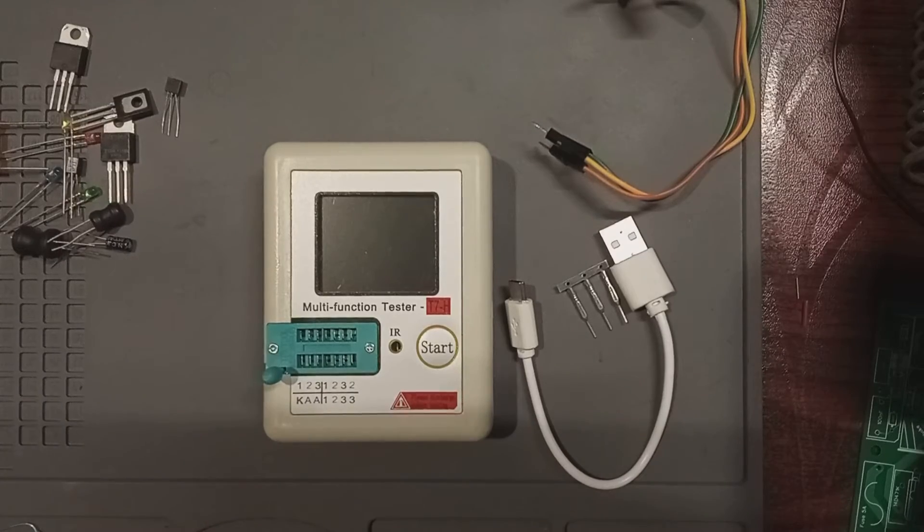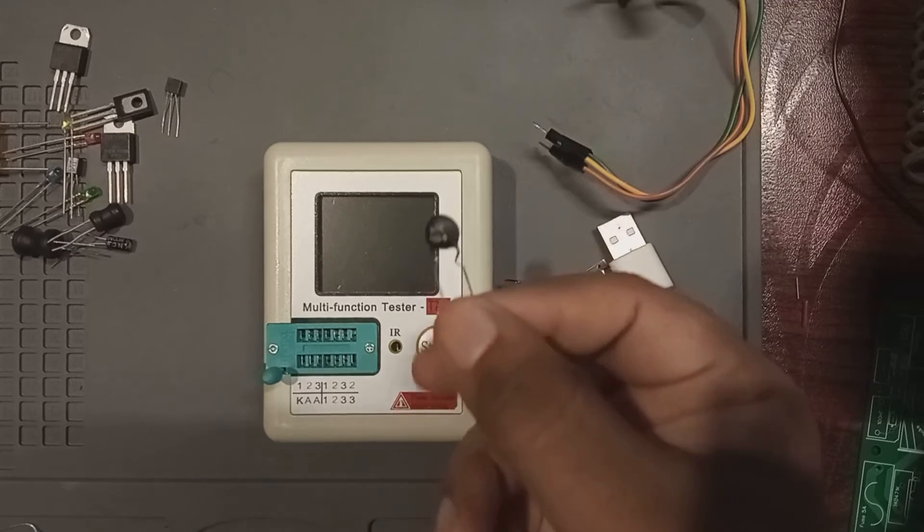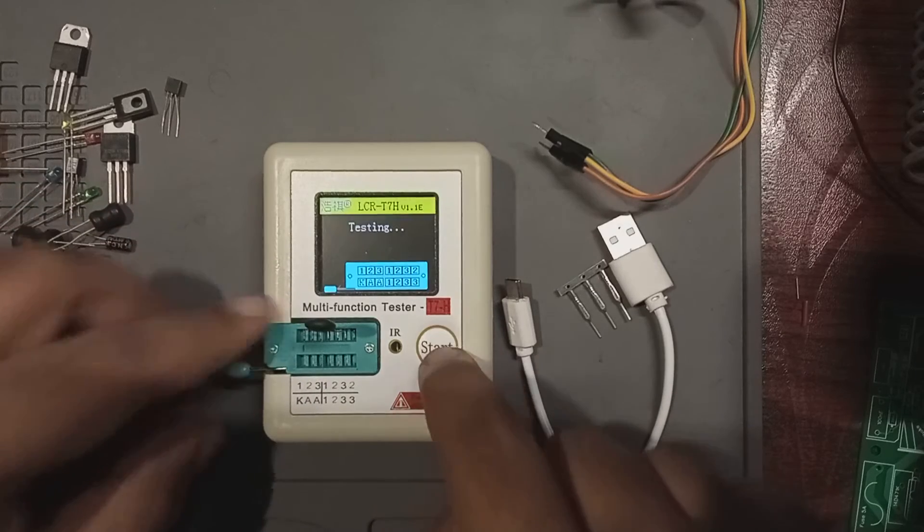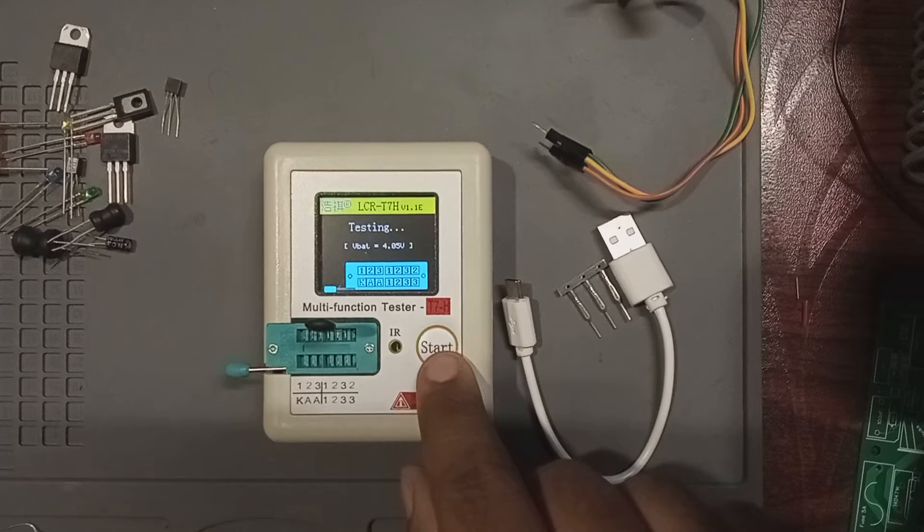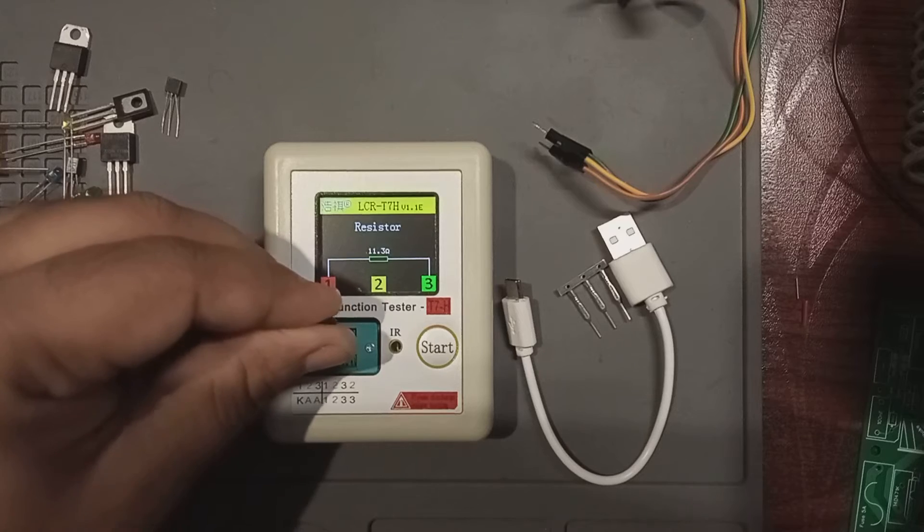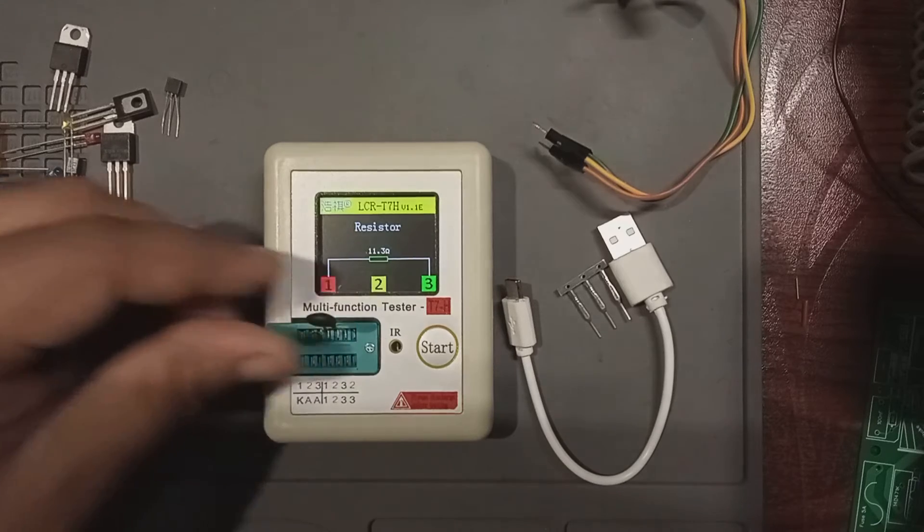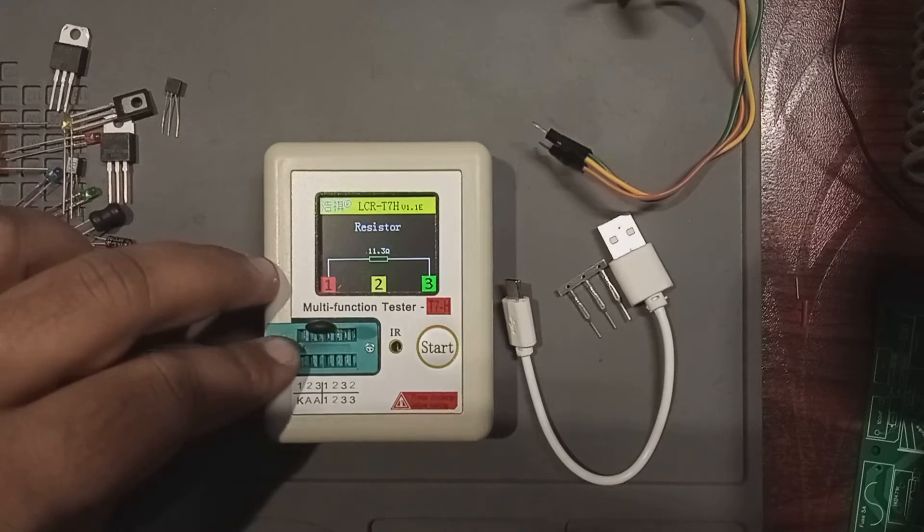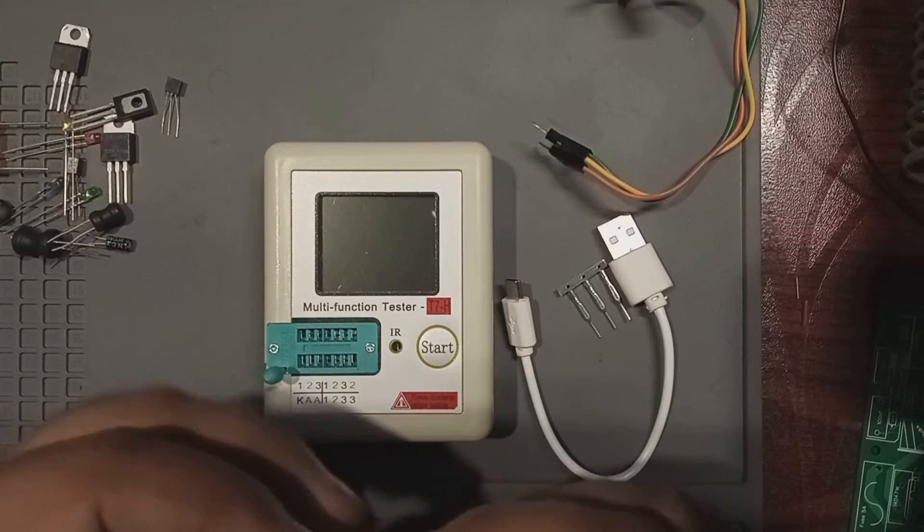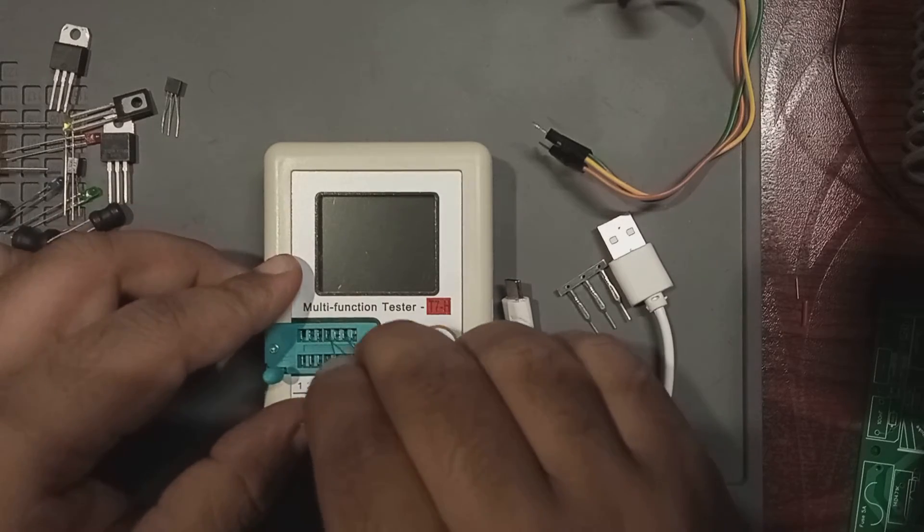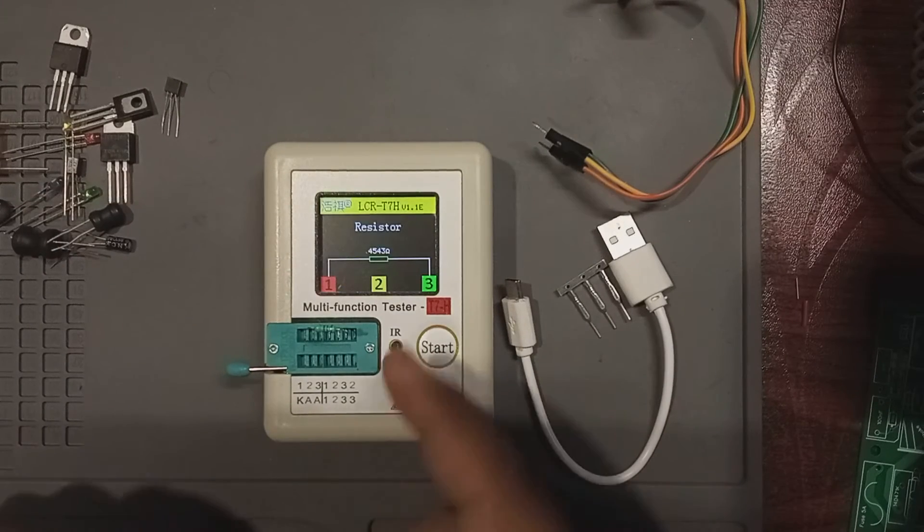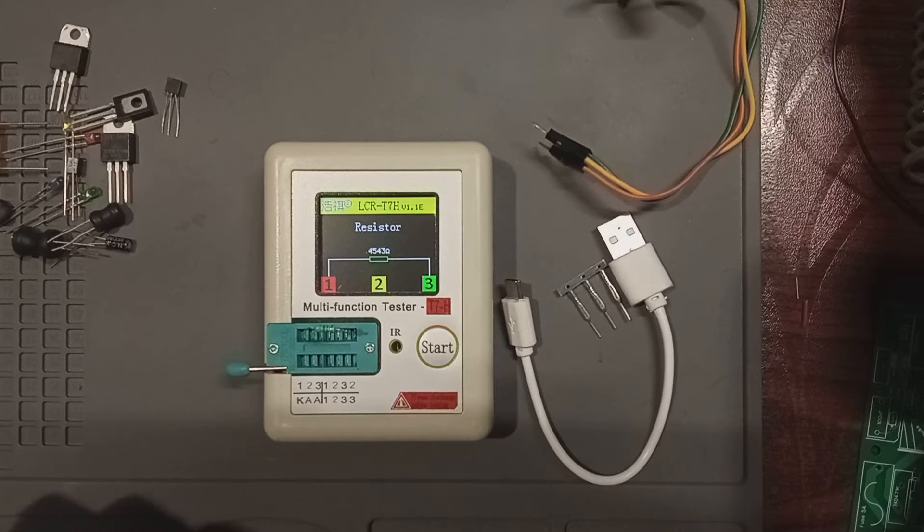Now let's test few resistor values. Here I have an NTC thermistor of 10 ohms to begin with. Let's plug it across pin 1 and 3 and press the start button. As you can see it is detected as 11.3 ohms resistor. But if you heat it up of course the resistance will be lower because it's an NTC thermistor. Now let's see a resistor of 4.7 kilo ohms. This is not a precision resistor by the way. It has around 5% tolerance, so it is going to be a little bit off of course. As you can see it is detected as 4543 ohms resistor.